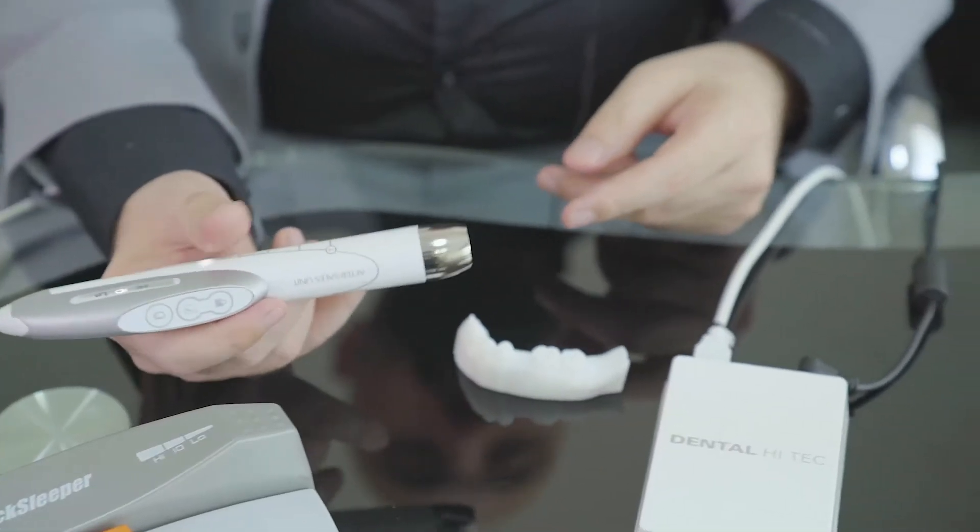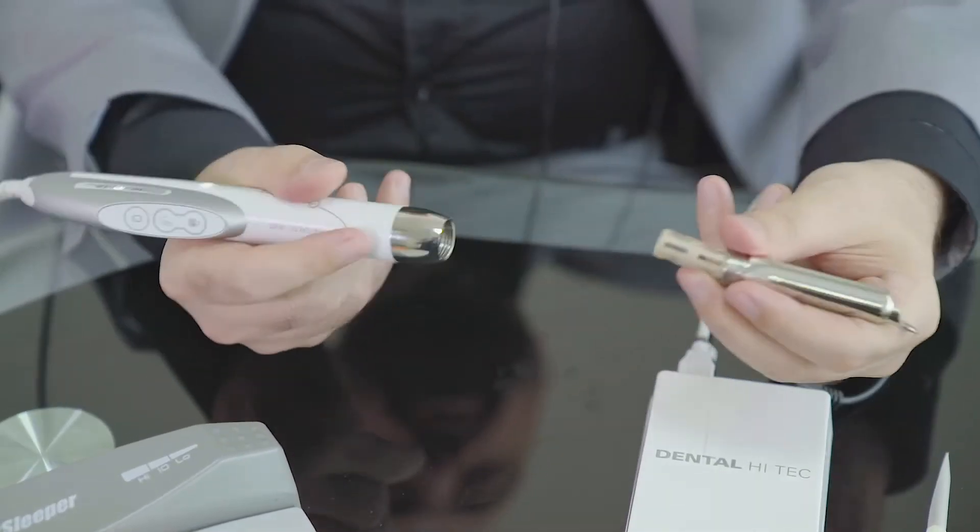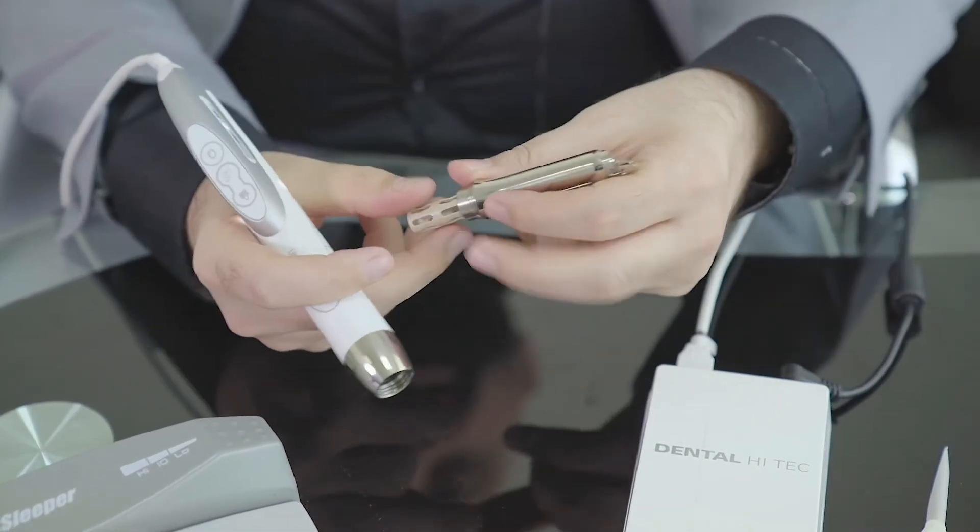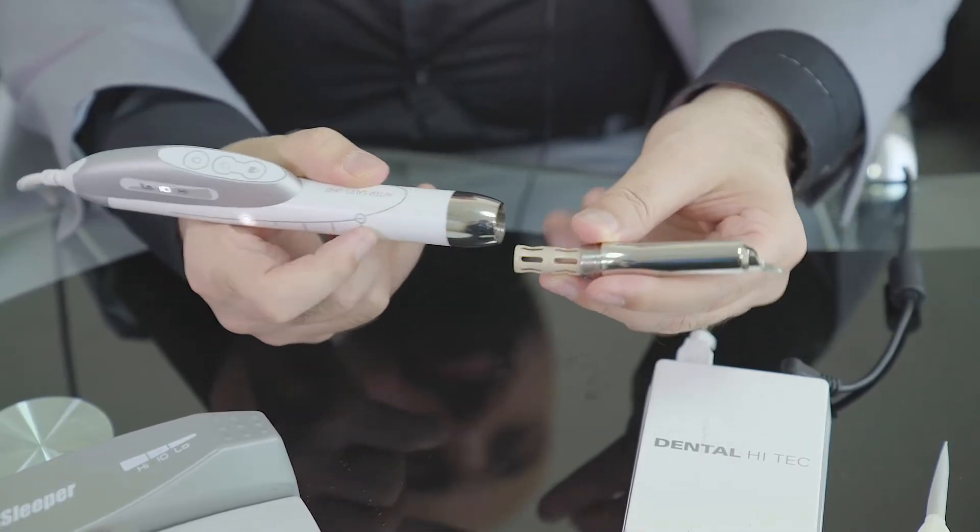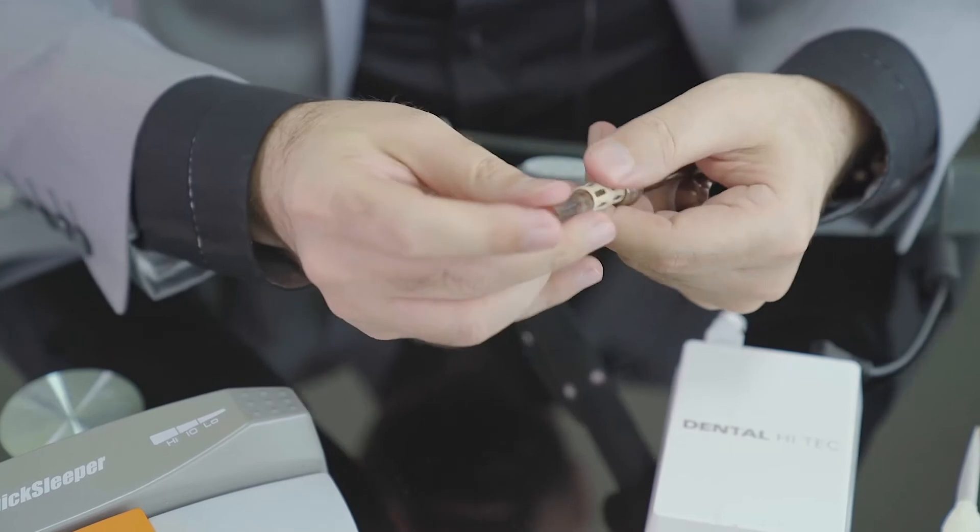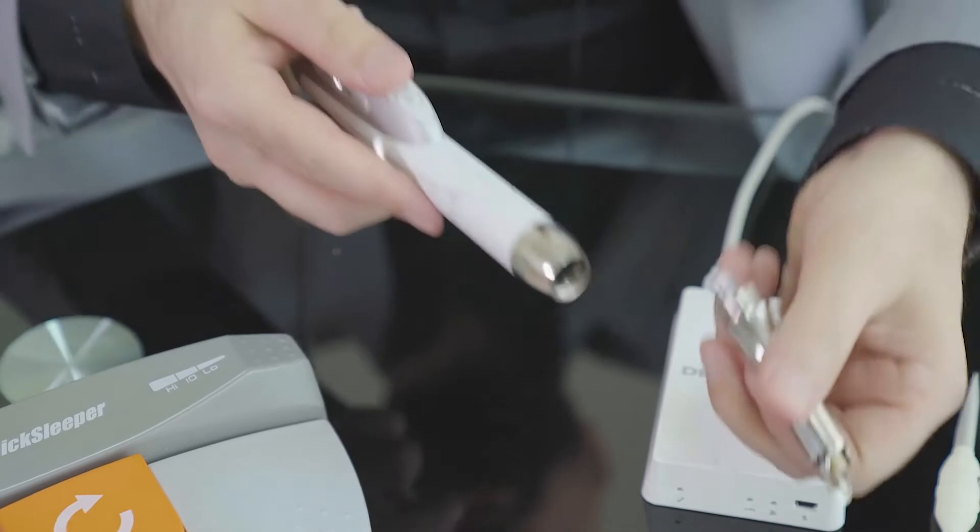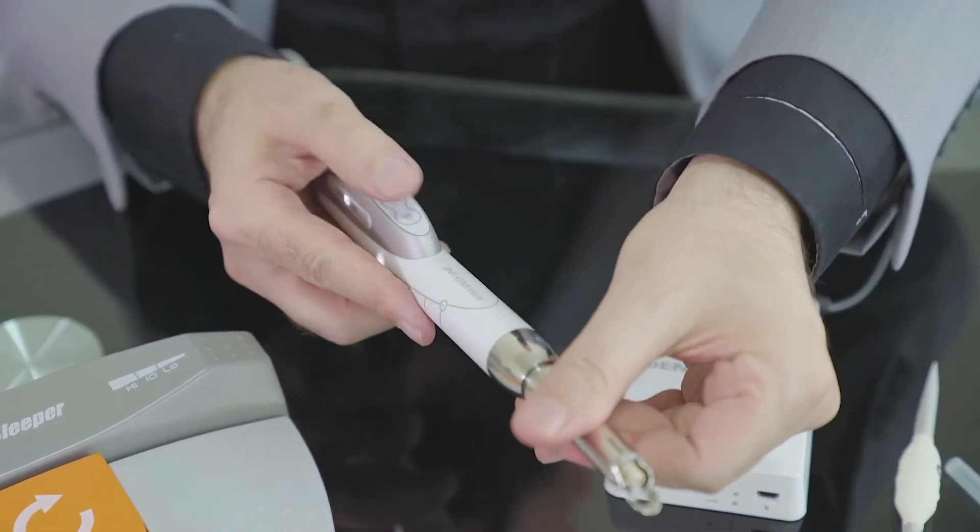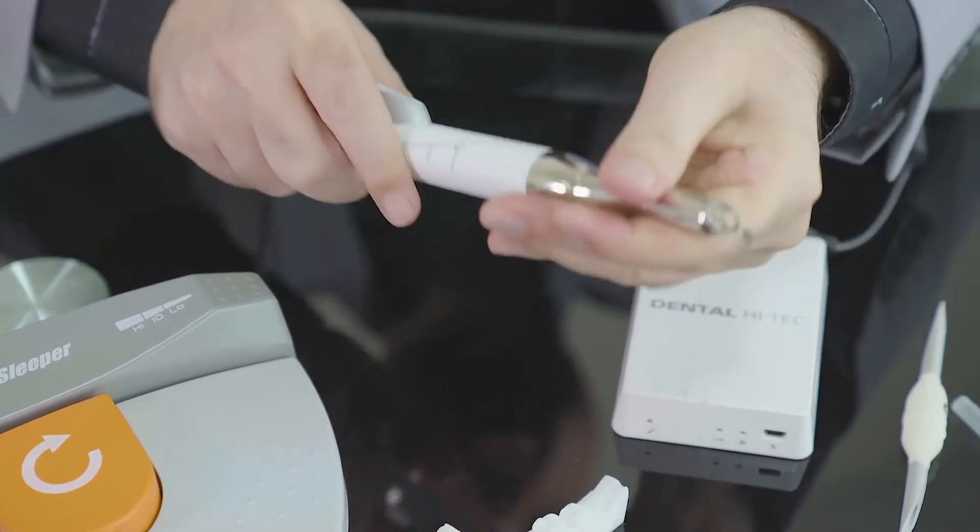For the installation, before starting to use Quick Sleeper to do intraosseous, we will use this container, the metal container. It's a very unique and special container to include the cartridge and to do rotation upon using Quick Sleeper for intraosseous. I place my cartridge inside the container and I screw it over the head of the handpiece, like this.